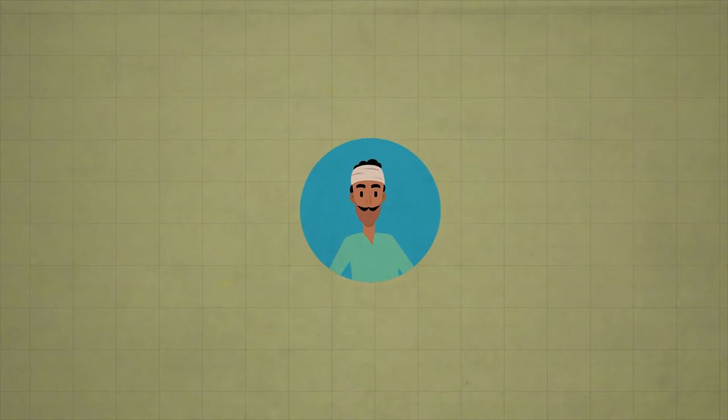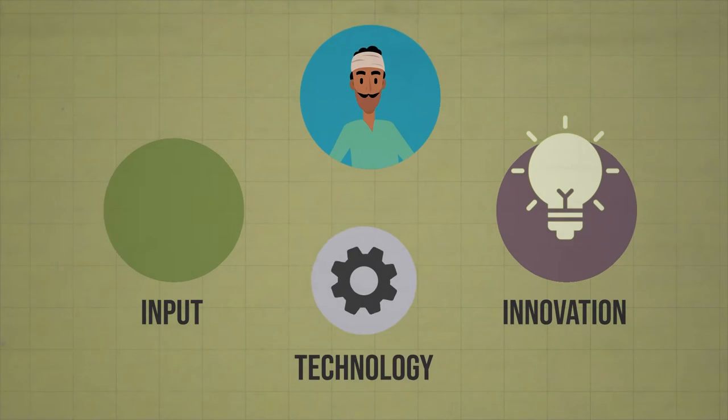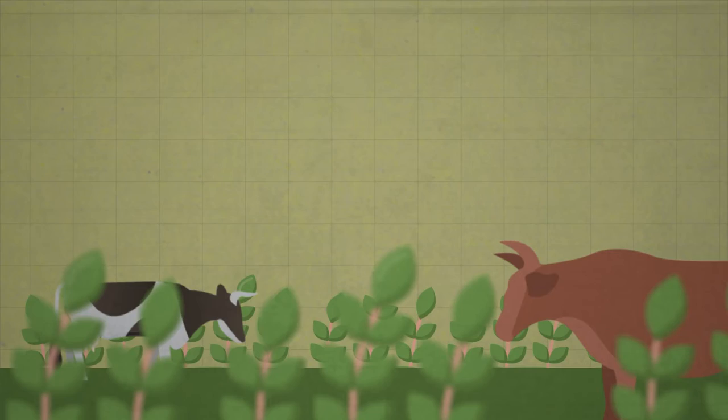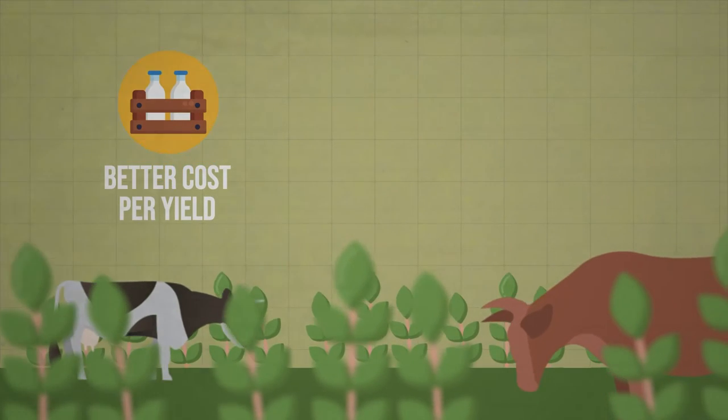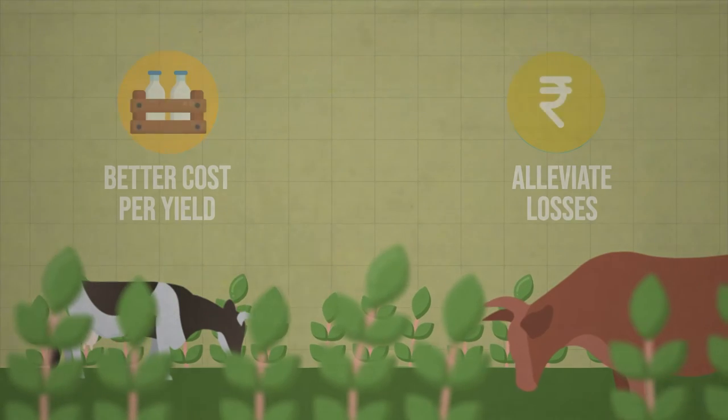Farmers need access to resilient input and value-add innovations, and appropriate tech at the farm level that could help them improve their cost per yield alongside alleviating losses and adapting to climate uncertainties.